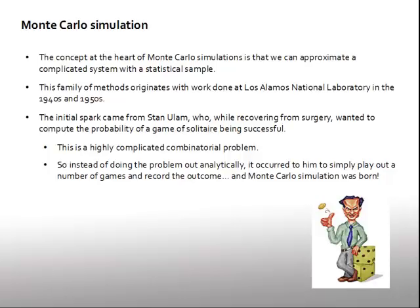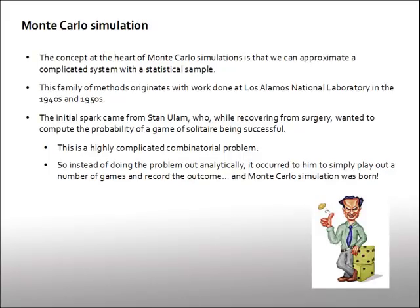Ulam got the idea to just deal out a bunch of games, record the results, and use that data to get a picture of what the probability distribution looks like. When he went back to Los Alamos, he talked to co-workers including Von Neumann, Fermi, and Metropolis — many of the same guys who worked on the Manhattan Project. They all quickly saw that using a discrete statistical sample of a system is an excellent way to approximate its probability distribution, and so Monte Carlo simulation was born.